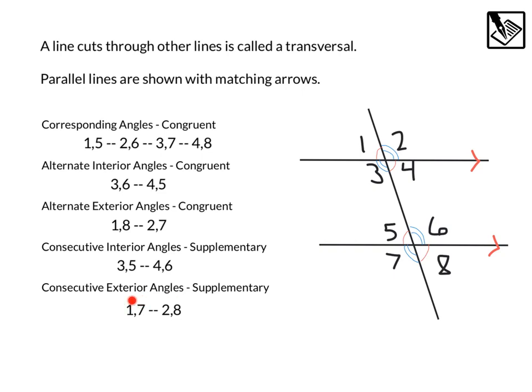Consecutive exterior, same side exterior, outside the lines, are also supplementary. That would be 1 and 7 would add to 180, and 2 and 8 would add to 180.